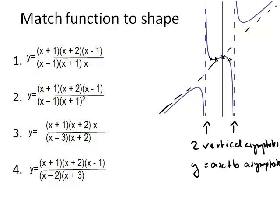Now we had two vertical asymptotes. The first function has three because we are dividing by three different factors, that means we can exclude this one.